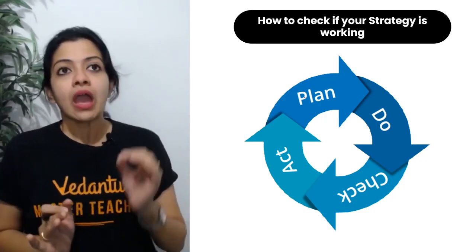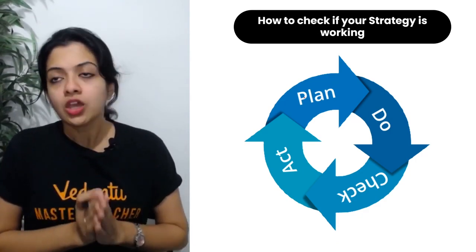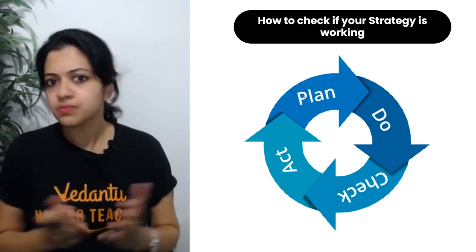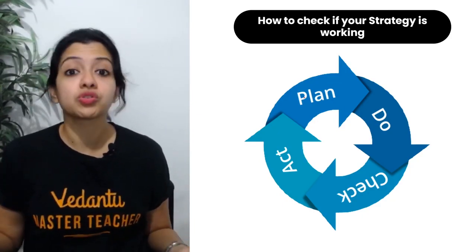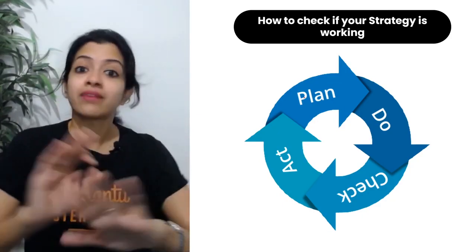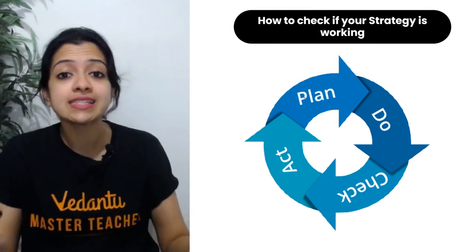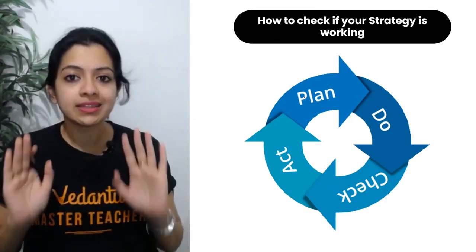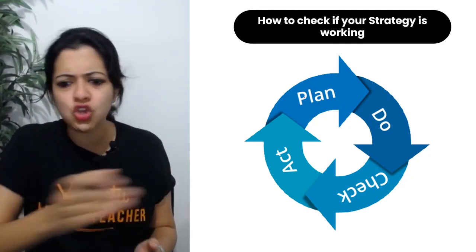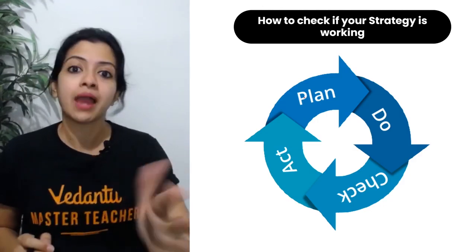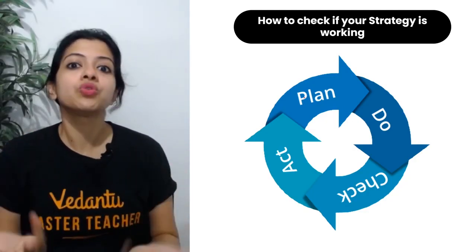I've given you the guidelines; now it's up to you to modify them as per your requirements. For example, you might want to spend only three days on Cell Cycle and Cell Division, or seven days on Photosynthesis — go ahead, but maintain an overall balance. You are the boss. Identify your strengths and weaknesses. Do not copy-paste what another person is doing or even exactly what I'm telling you. I'm here only to give you a basic set of guidelines so you know where to get started.